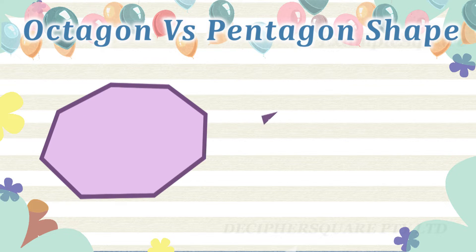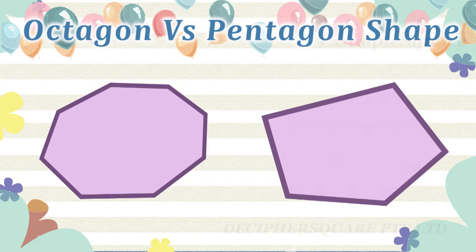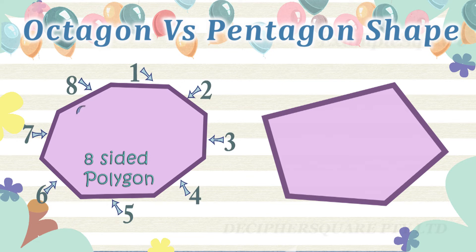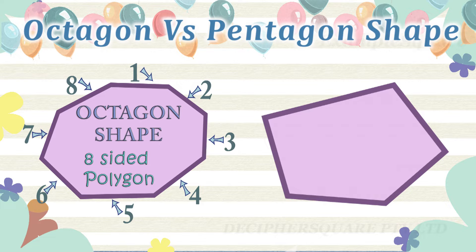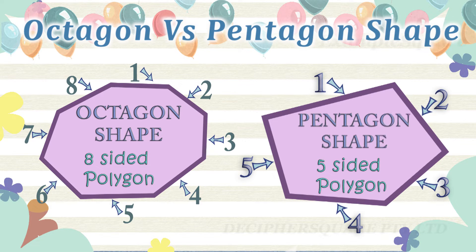Here is another example. Which one of these is an octagon and which one is a pentagon? This is an octagon with eight sides and this is a pentagon with five sides.